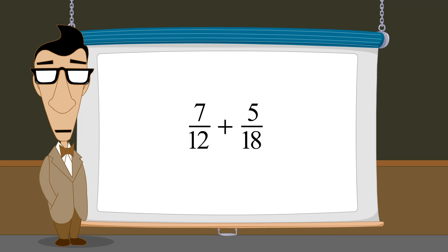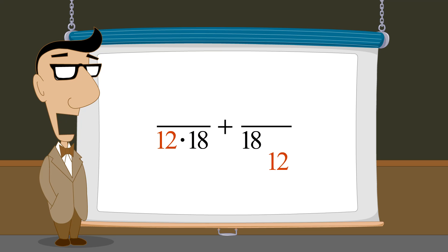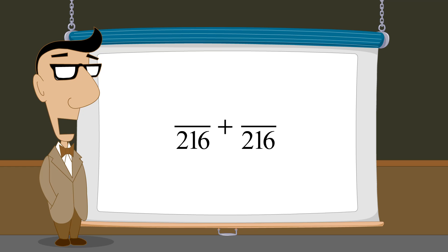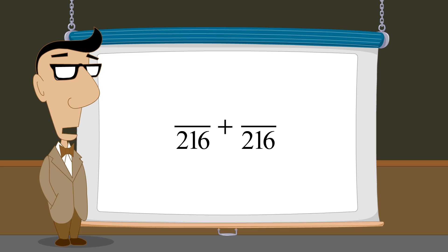By finding a common denominator, we can add or subtract fractions with different denominators. However, sometimes when we multiply the denominators of fractions together to find a common denominator, we create an unnecessarily large common denominator. We will see in the next lecture how to find the smallest possible common denominator, otherwise known as the least common denominator.